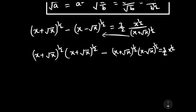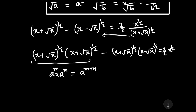We should know that if there is a^m multiplied by a^n, this can be written as a^(m+n). With the help of this formula we will solve the first term. We should also know that if there is a^m and b^m with the same power, this can be written as (ab)^m. With this formula we will solve the second term.